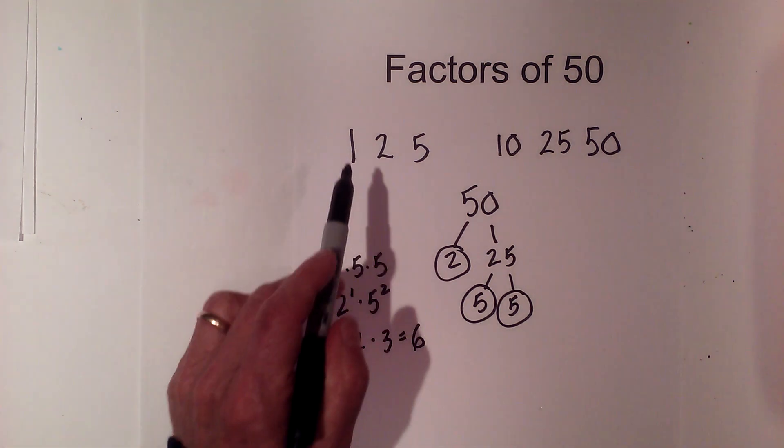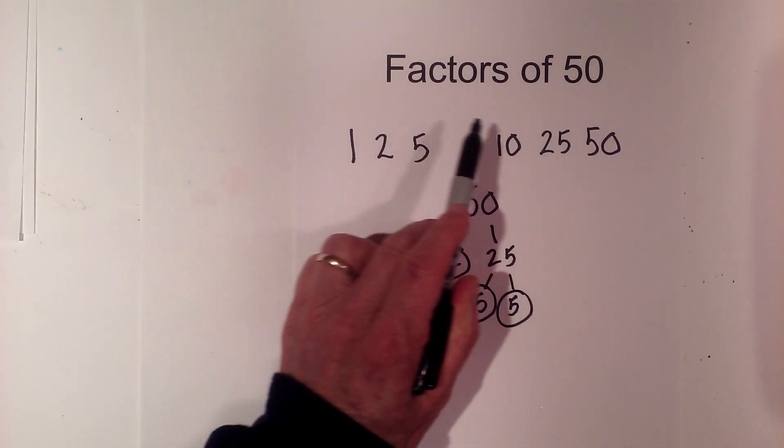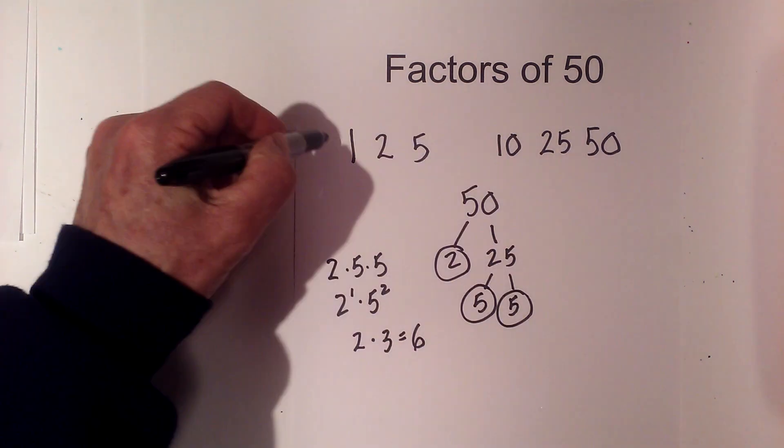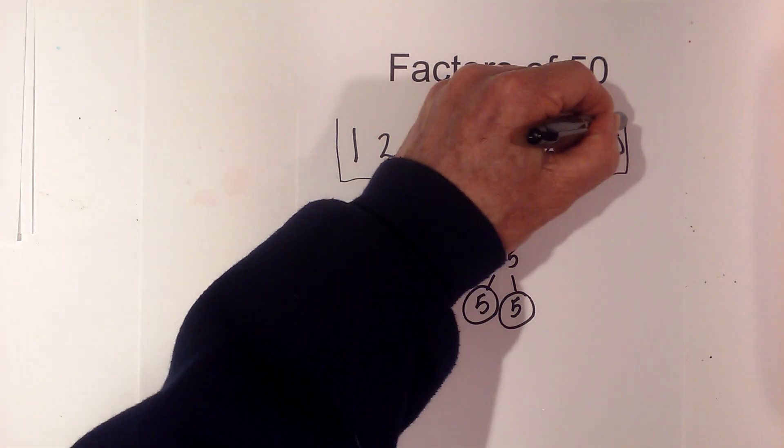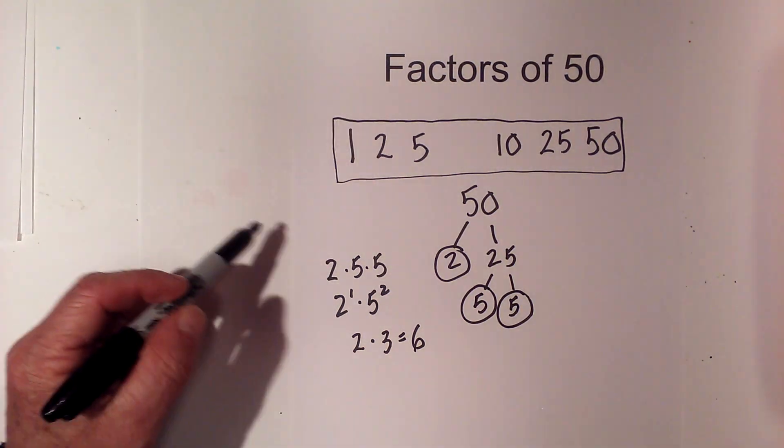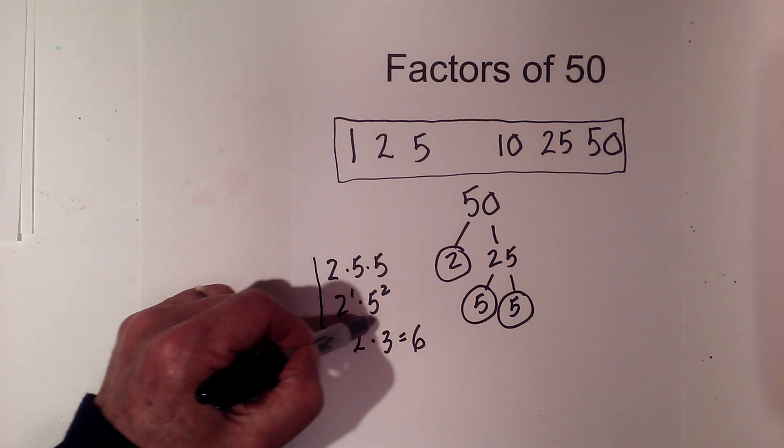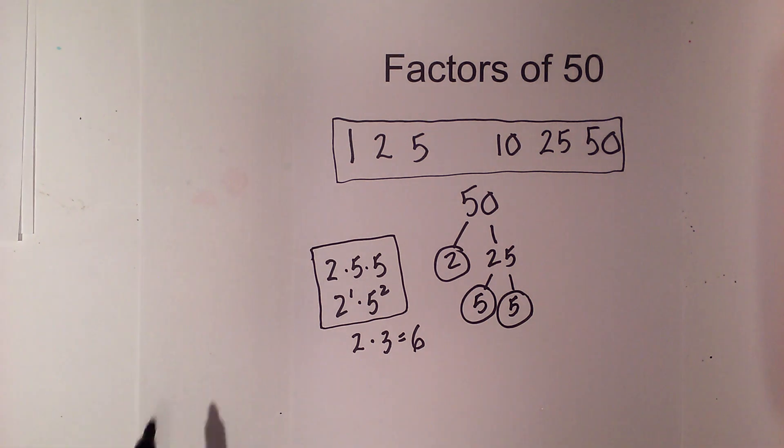So I should have 6 factors: 1, 2, 3, 4, 5, 6. Here are the factors of 50 and here are the prime factors of 50.